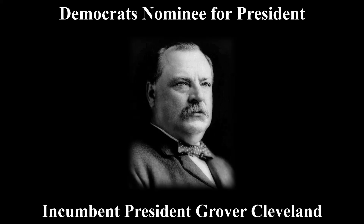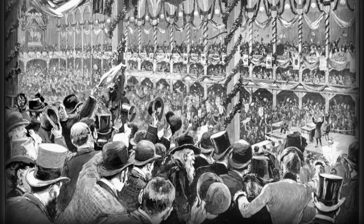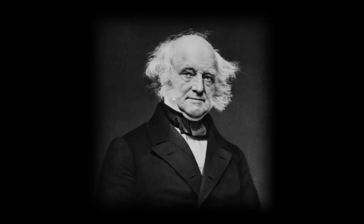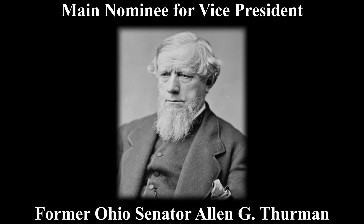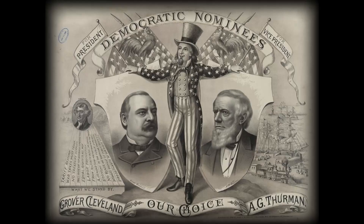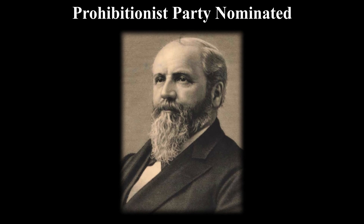For the Democrats, their nominee for president was incumbent President Grover Cleveland, the first Democrat to be re-nominated since Van Buren in 1840. For running mate, the main nominee was former Ohio Senator Alan G. Thurman, and in the end Thurman became the new running mate to President Cleveland.